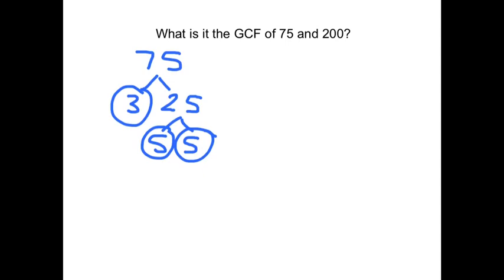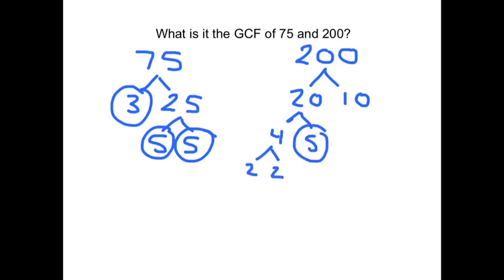All right, now I make my factor tree and find the prime factorization of 200. That could be 20 times 10. 20 is 4 times 5. 5 is prime. 4 is 2 times 2. And the 10 is 2 times 5.